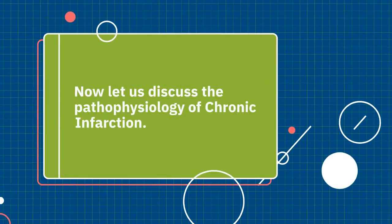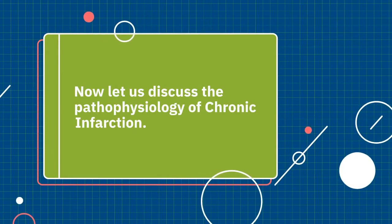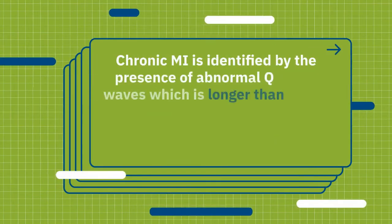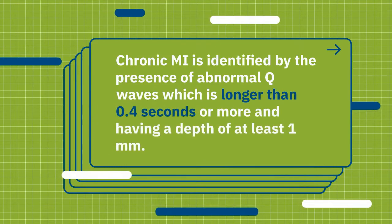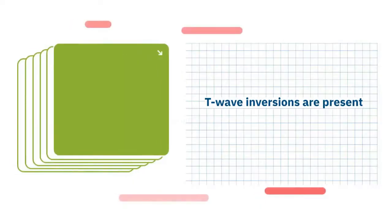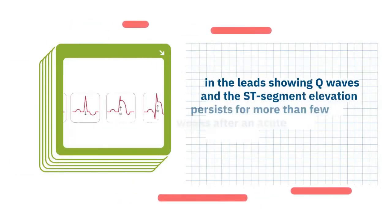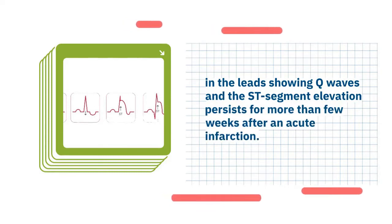Now let us discuss the pathophysiology of chronic infarction. Chronic MI is identified by the presence of abnormal Q waves which are longer than 0.04 seconds or more and having a depth of at least 1 mm. T wave inversions are present in the leads showing Q waves, and the ST segment elevation persists for more than a few weeks after an acute infarction.